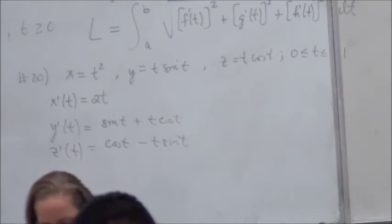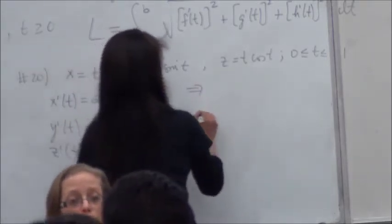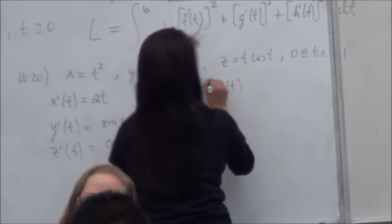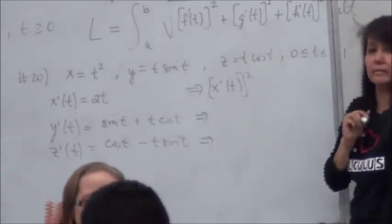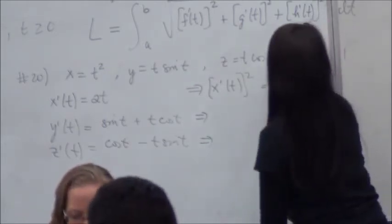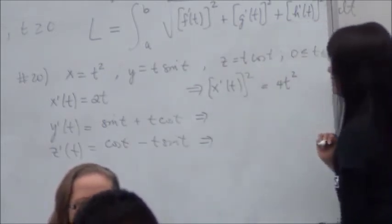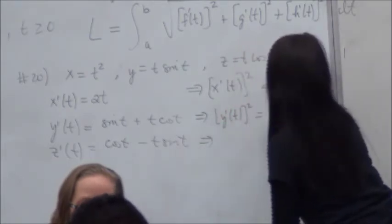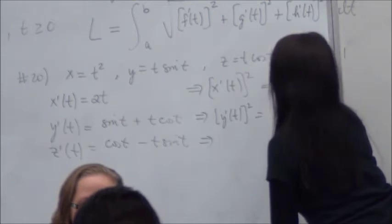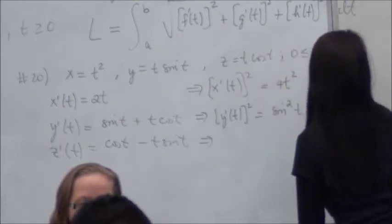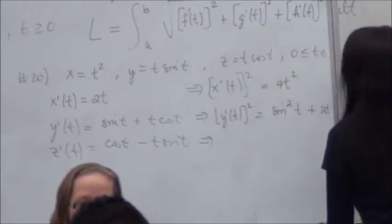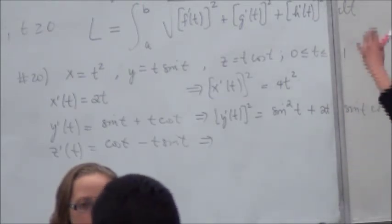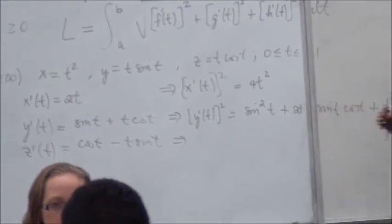And then of course, what do we need to do with these guys? We need to do what? Square each one. Right? So it will be 4T squared. Right? If we square this, what will we get? It will be sine squared T plus 2T sine T cosine T plus T squared cosine T. And I think it's better to write it this way. We'll see why in a minute.